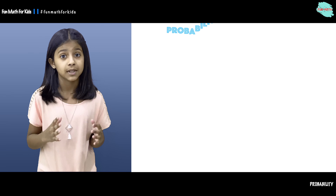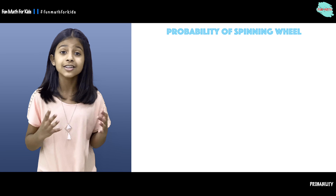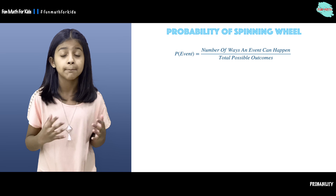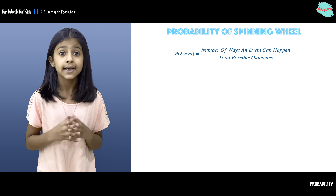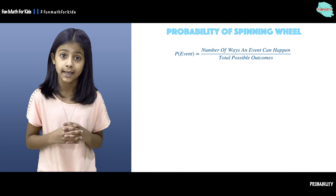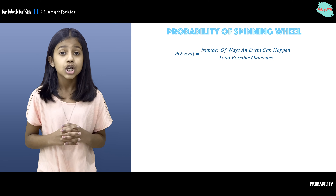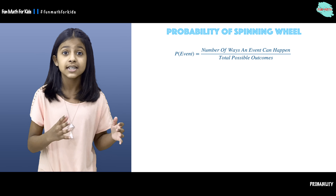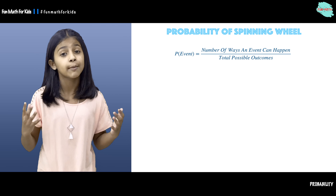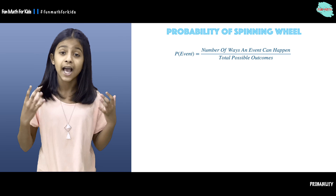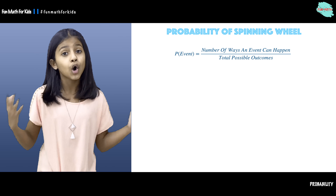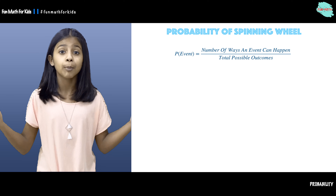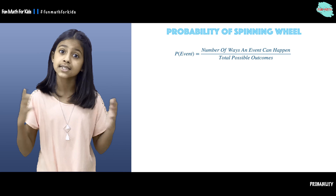Let's talk about the formula. We already talked about the formula many times, but let's talk about it again. The probability of an event is the number of ways an event can happen over the total possible outcomes.